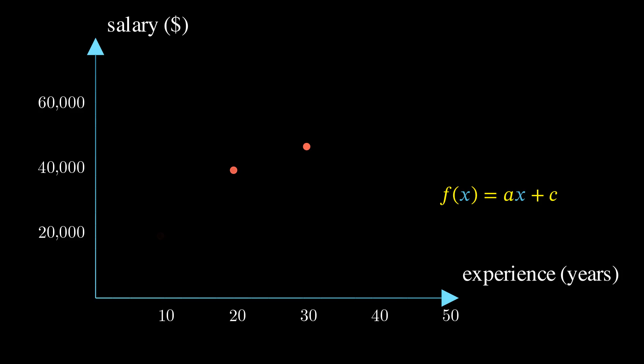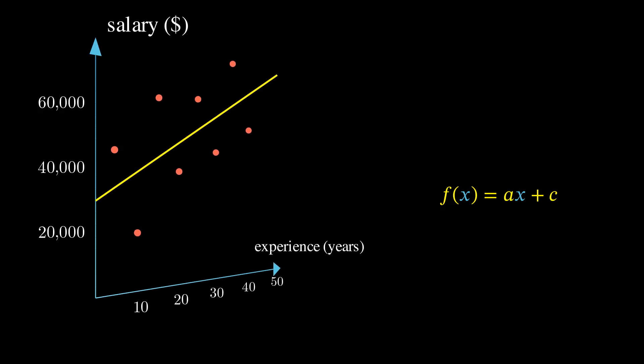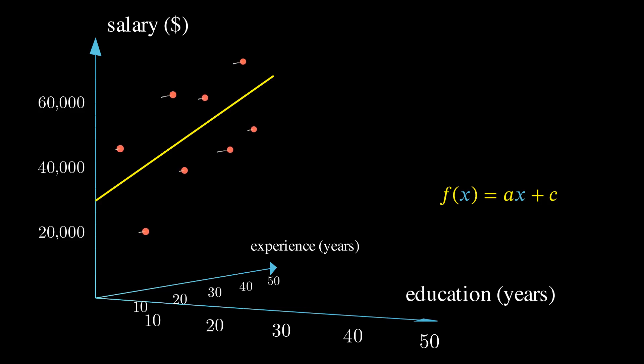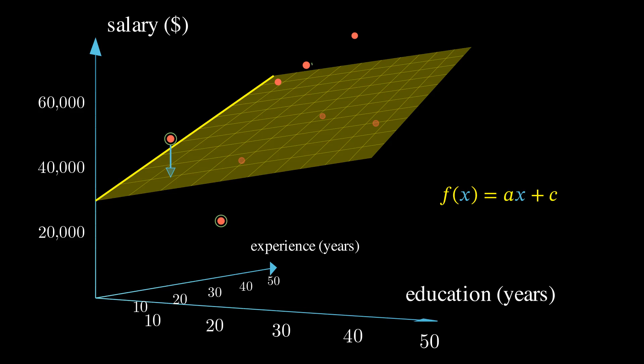Let's revisit our example of employee salaries. Obviously, in the real world, salaries depend on many other factors. For example, we can consider the number of years of formal education. To account for this extra dimension, instead of fitting a straight line, we will fit a plane. What this means for our equation is that we must add another variable.